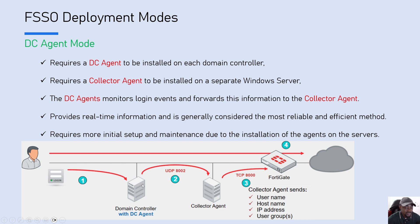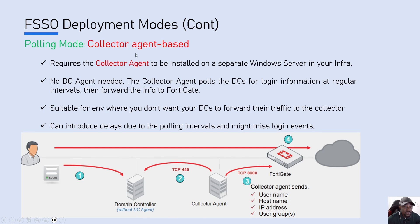The other mode is the polling mode with collector agent-based. In this mode you don't need to install the DC agent on the domain controllers — you only install the collector on a Windows server on your infrastructure. When users connect to the domain controllers, since there is no DC agent installed, the domain controllers will not forward traffic. Instead, the collector comes to the domain controllers to pull the information and then forwards it to FortiGate. This can be suitable if you don't want domain controllers to push traffic to any other server.